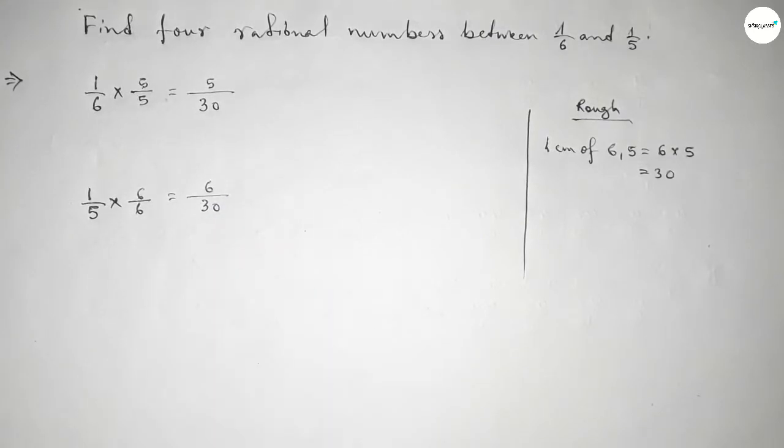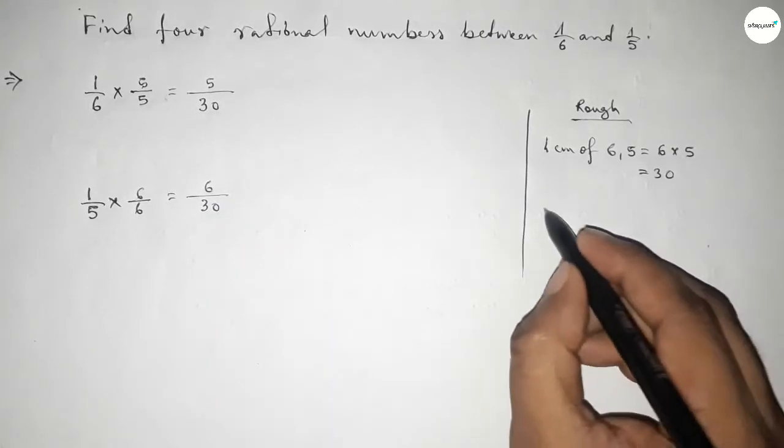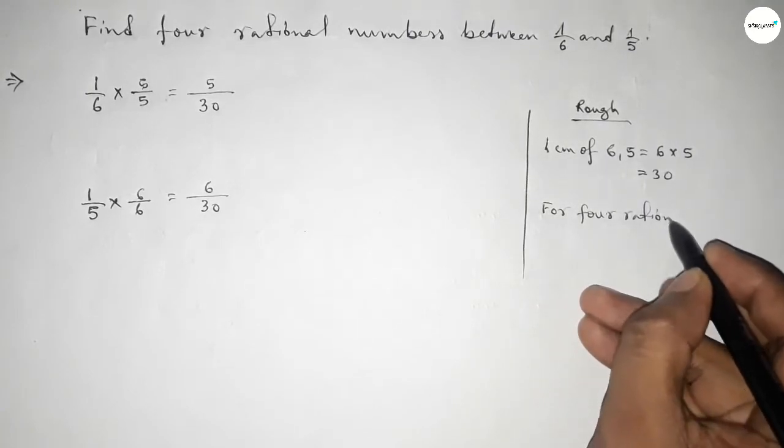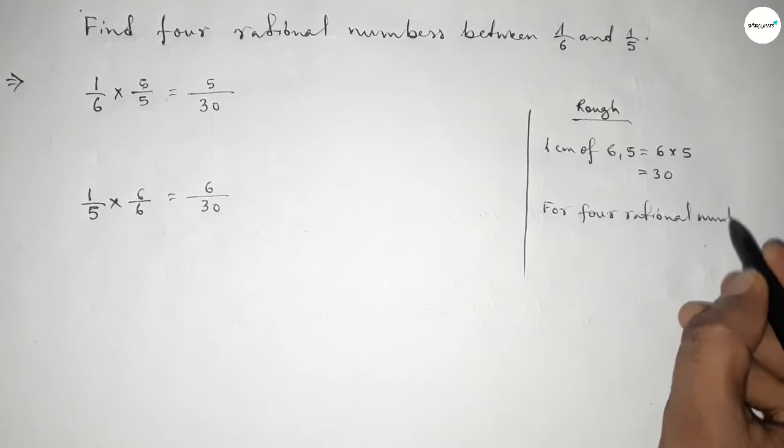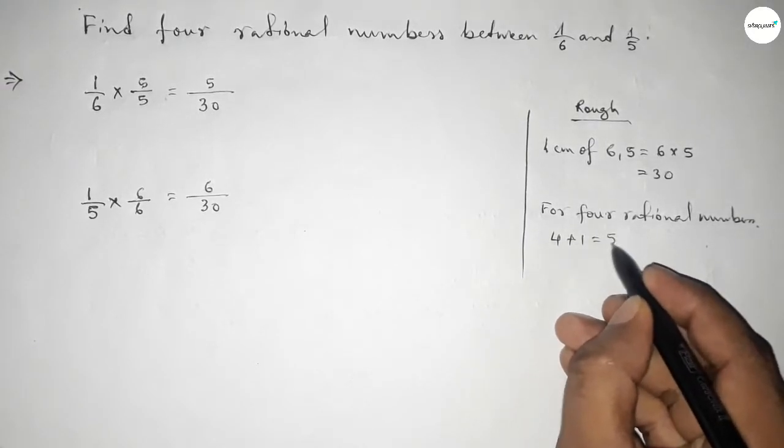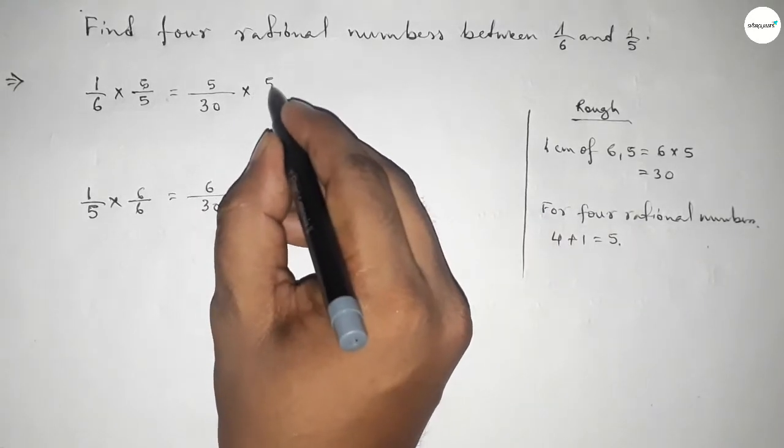Now for four rational numbers between any two numbers, we should follow this method. We should multiply both numbers up and down by 4 plus 1 equal to 5. By this way, 5 over 5 and here similarly 5 over 5.